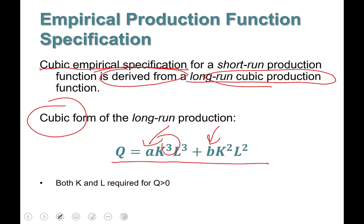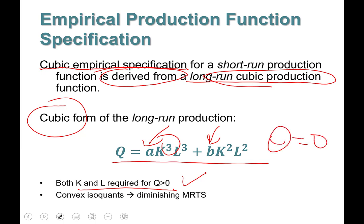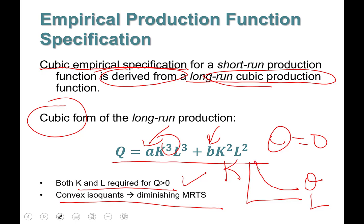The cubic form long-run production function has desirable properties. First, both labor and capital are required for a positive level of output — if either is zero, output is zero. Second, this production function produces convex isoquants that exhibit diminishing marginal rate of technical substitution, so the isoquants are convex to the origin with diminishing MRTS.